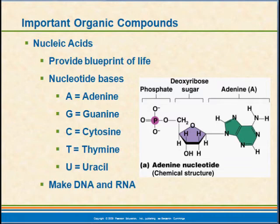DNA and RNA are the nucleic acids. DNA provides basically the blueprint for life. When we talk about a gene, we're talking about a strand of DNA that codes for specific proteins that our body can build — proteins being the actual machinery that allows our bodies to function. This code is made of basically five nucleotide bases.